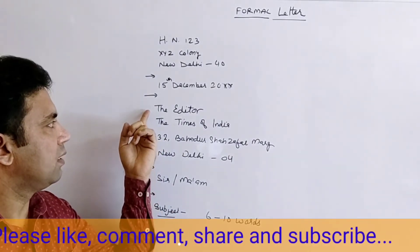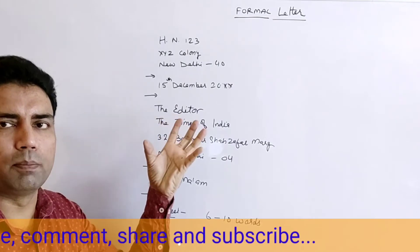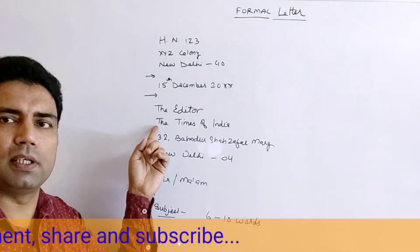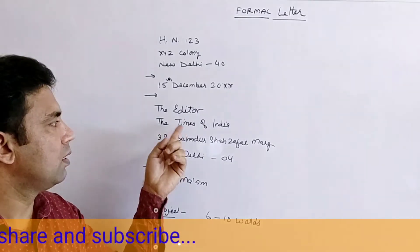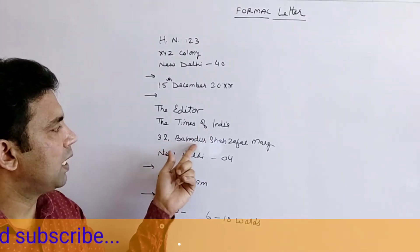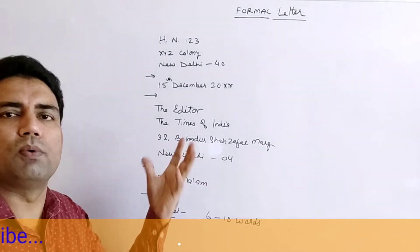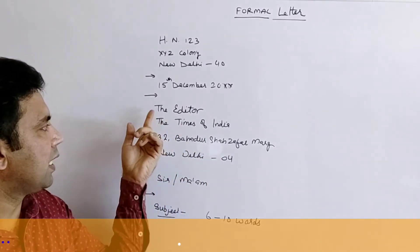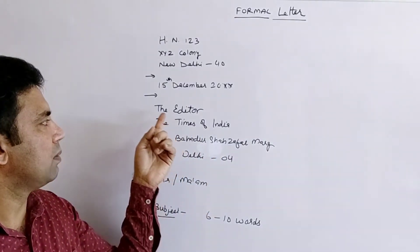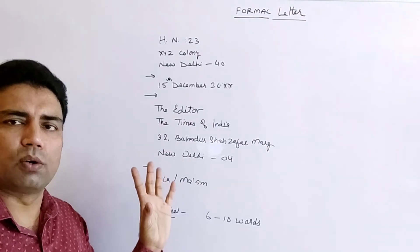Leave a line again and write the recipient's address. For a letter to the editor: 'The Editor, The Times of India' — note 'The' before the newspaper name as an article, with Times and India capitalized — then the office address, for example 32 Bahadur Shah Zafar Marg, New Delhi, with pin code. If you are writing to the police commissioner: 'The Commissioner, Delhi Police,' followed by the office address. You can change it accordingly.